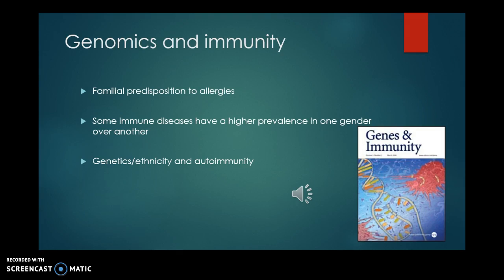As immunity relates to genomics, you can inherit a familial predisposition to developing allergies. Some immune diseases have a higher prevalence in one gender or ethnicity. People with a family history of autoimmune disorders may be at greater risk of developing autoimmunity, and some autoimmune disorders are more likely to occur in men or women. Genomics and immunity are strongly tied together, and a genetic predisposition to autoimmune disorders generally cannot be ruled out.